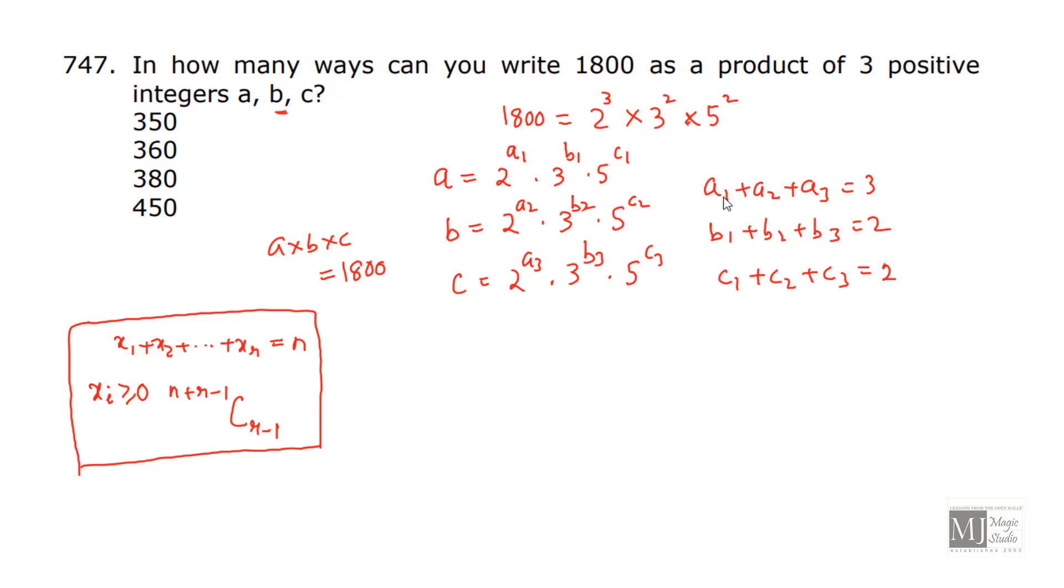So, in how many ways we can assign values to a1, a2, a3? n is 3, r is 3. So, the formula says n + r - 1, C r - 1. So, for the first part, we can have the values for a1, a2, a3 in 5C2 ways. For b's, we can have the value assigned in 4C2 ways. And for c also, 4C2 ways. So, in how many ways we can have a × b × c = 1800 is 5C2, that is 10, 4C2 is 6, another 4C2 is 6. That is 360 ways.